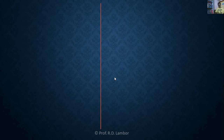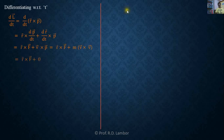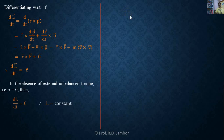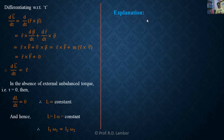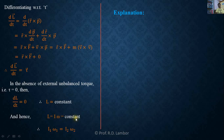Welcome to free online classes of physics with Lambo sir. In the last lecture you studied the law of conservation of angular momentum. At the start you studied the statement of the law, and after that you proved the law. According to the law, if external torque acting on a rotating body is absent, the angular momentum of that body remains constant. The formula is L = Iω = constant.